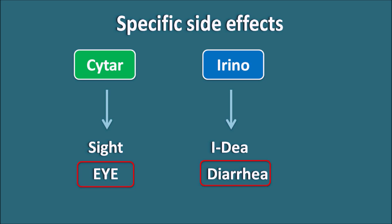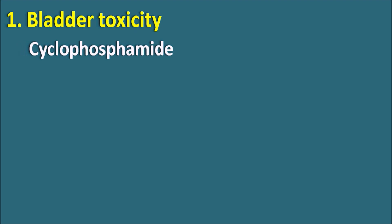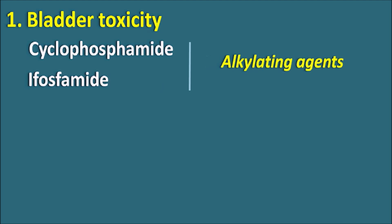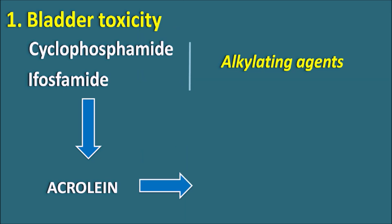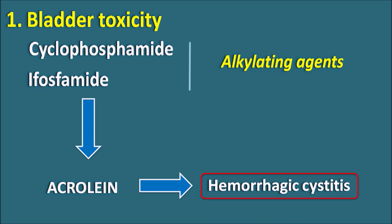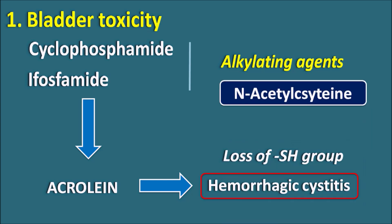Now let us see these specific side effects in detail. First is bladder toxicity. Drugs like cyclophosphamide and ifosfamide, both belonging to the alkylating agents — specifically nitrogen mustards — can be split into an active metabolite called acrolein, a cytotoxic metabolite produced when these drugs are administered. Acrolein produces bladder toxicity resulting in hemorrhagic cystitis due to depletion of thiol groups within the bladder cells. To prevent this, we can give thiol group donors like N-acetylcysteine externally.